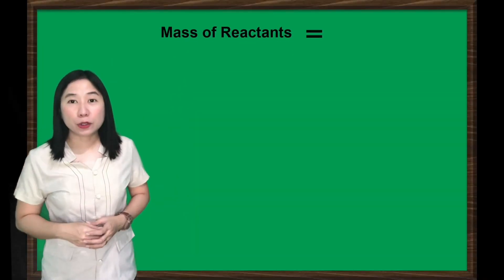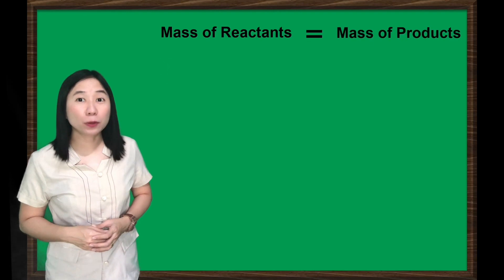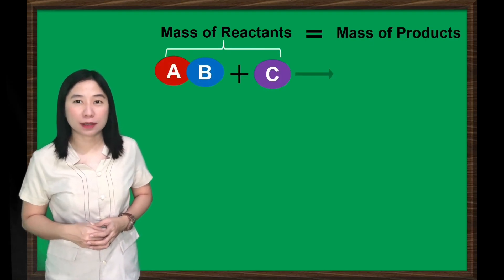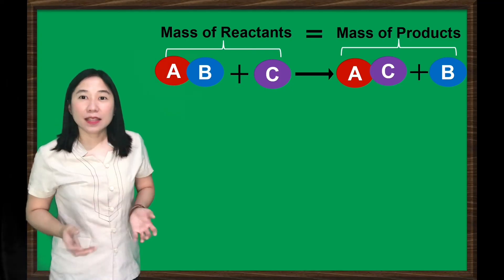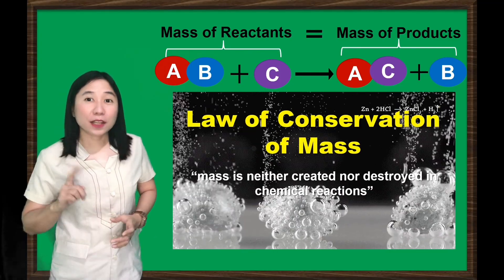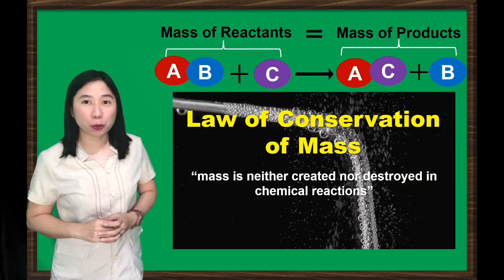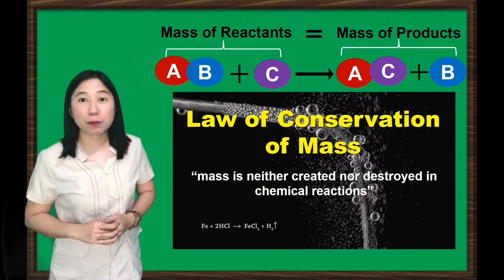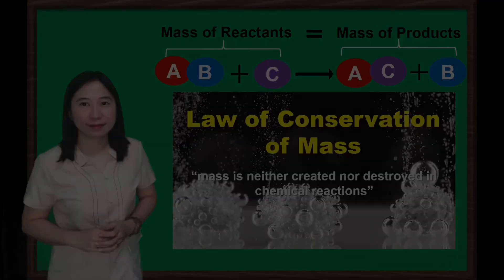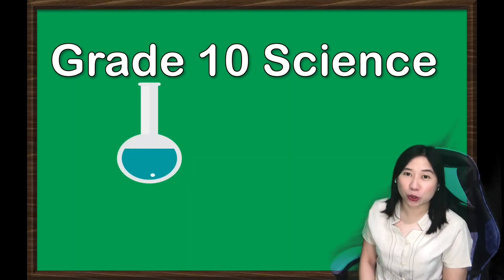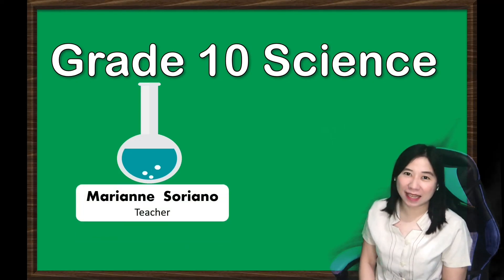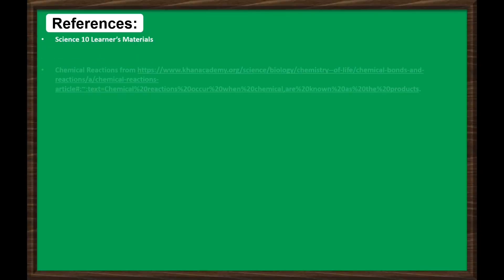Always remember that during a chemical reaction, the total mass of reactants is always equal to the total mass of products, according to the law of conservation of mass. No atoms will be created nor destroyed during a chemical reaction, but rather will undergo rearrangement. I hope you learned and enjoyed our lesson. This is Ma'am Marian Soriano. See you in the next lesson.